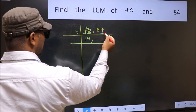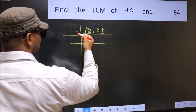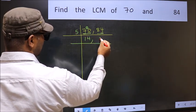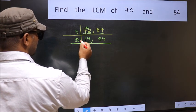The other number 84 last digit is neither 0 nor 5. So this is not divisible by 5. So you write it down as it is. Now here we have 14. 14 is 2 sevens 14.